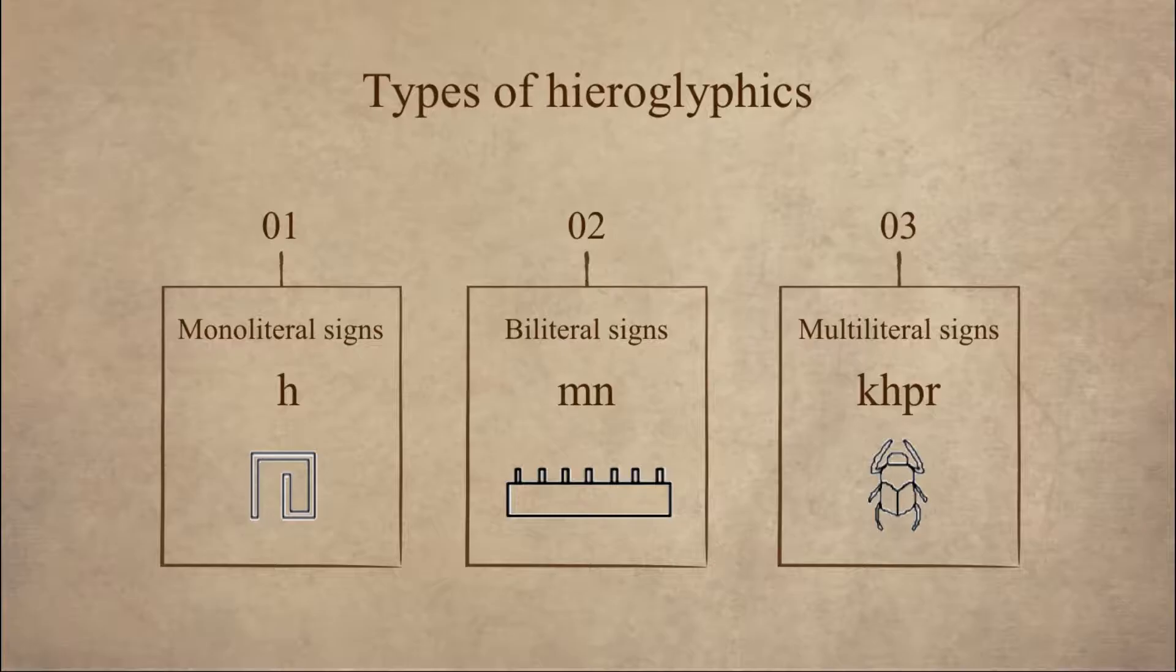The second type is biliteral signs. So basically these are signs that can be transcribed into two consonants. The example given here is the hieroglyphic MEN, which transcribes two consonants M and N.